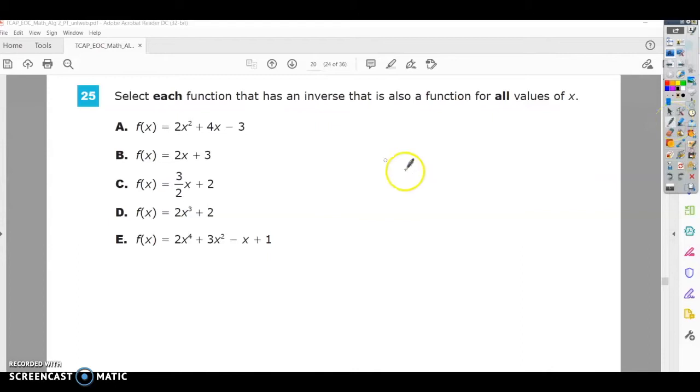All right, so what is it asking? Select each function, that means we're going to have multiple answers. Multiple answers that has an inverse. We have to know what the inverse is, that is also a function. So we know it has to pass the vertical line test.